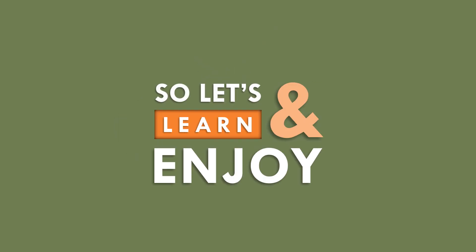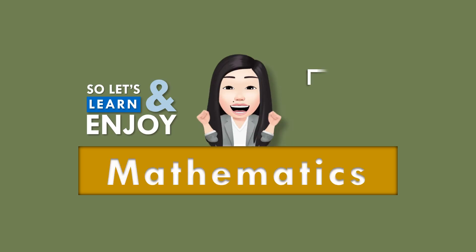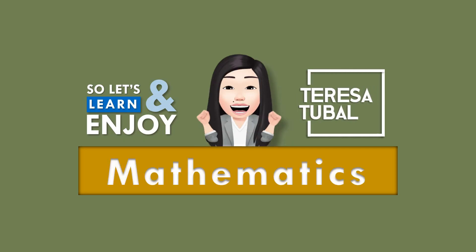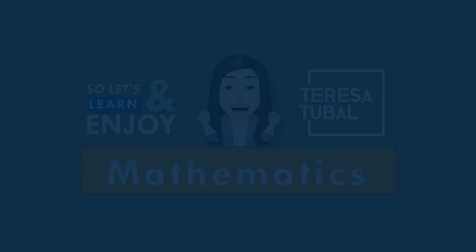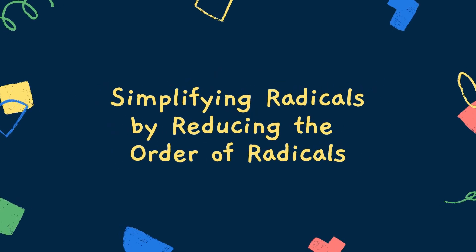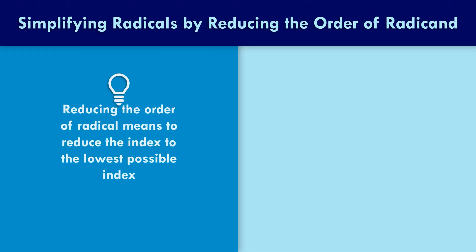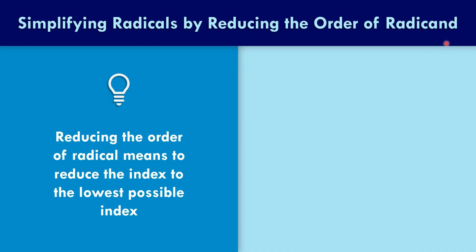Let's learn and enjoy Mathematics! Our lesson is about simplifying radicals by reducing the order of radicals. Reducing the order of a radical means to reduce the index to the lowest possible index.